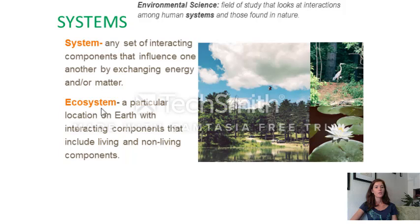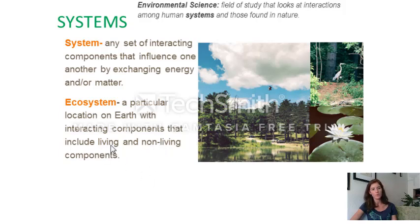Another key term is ecosystem. An ecosystem is a location on Earth that has interacting components including both living and non-living components — that is, both biotic and abiotic components.